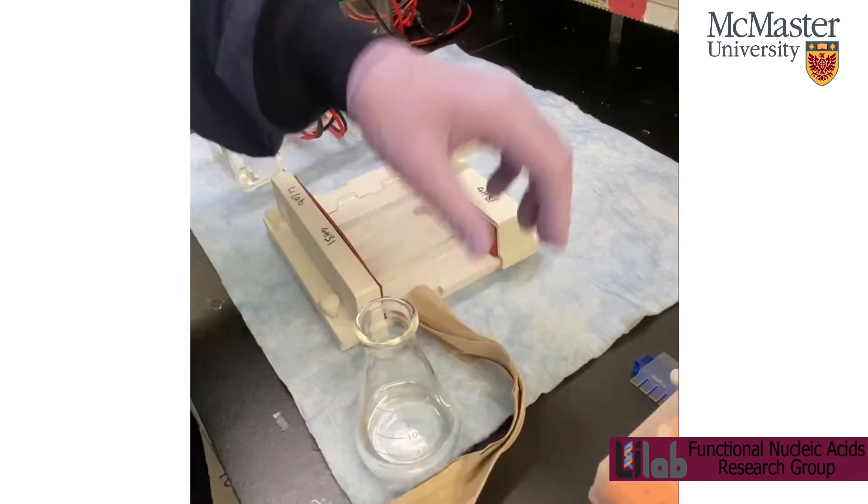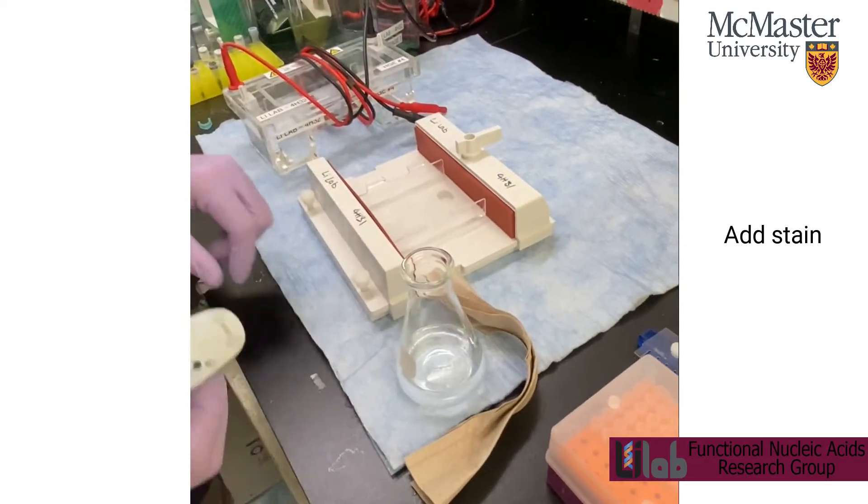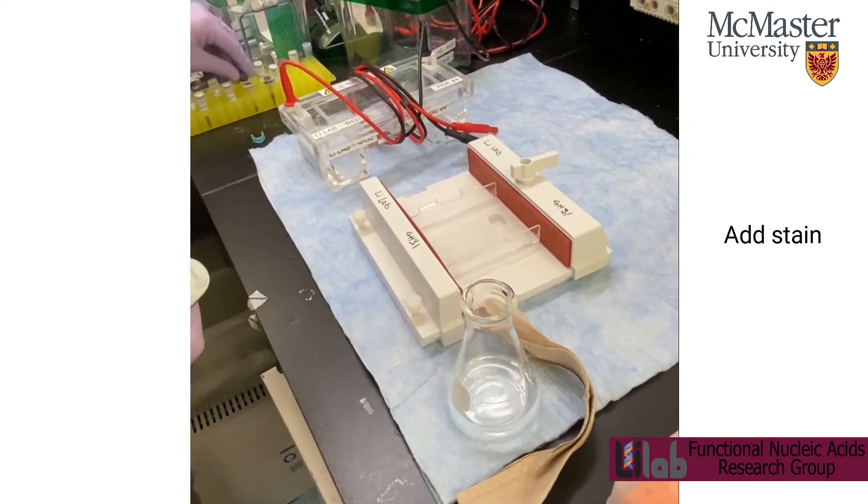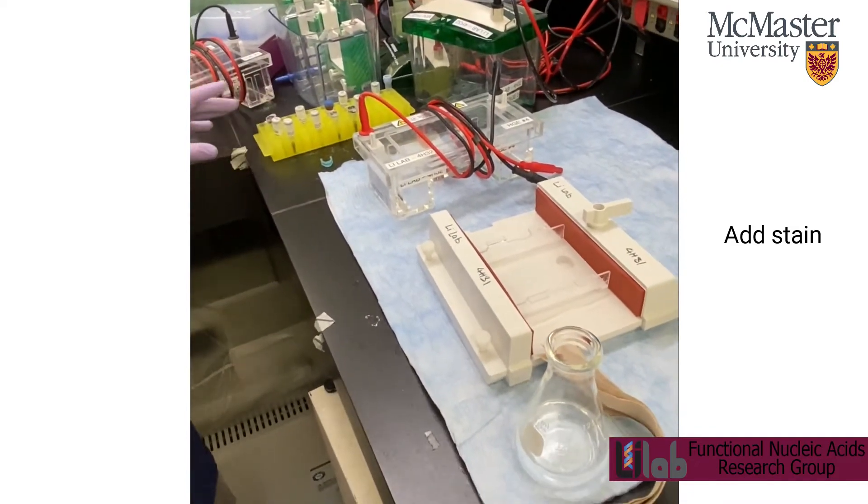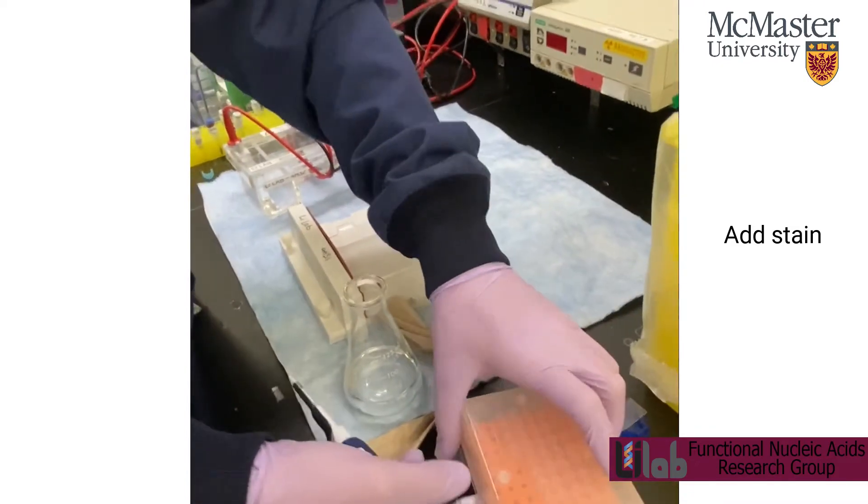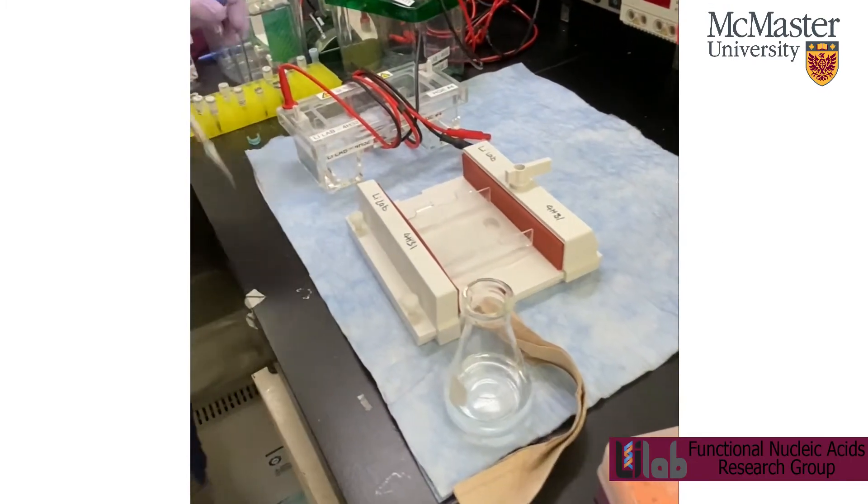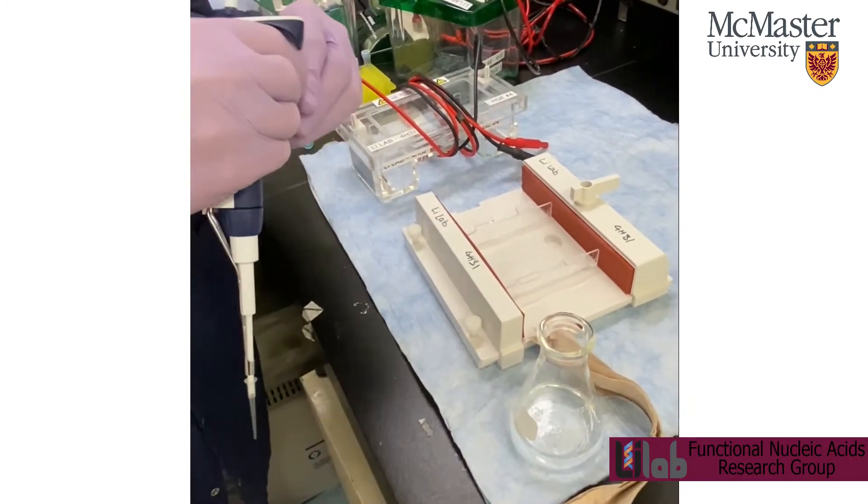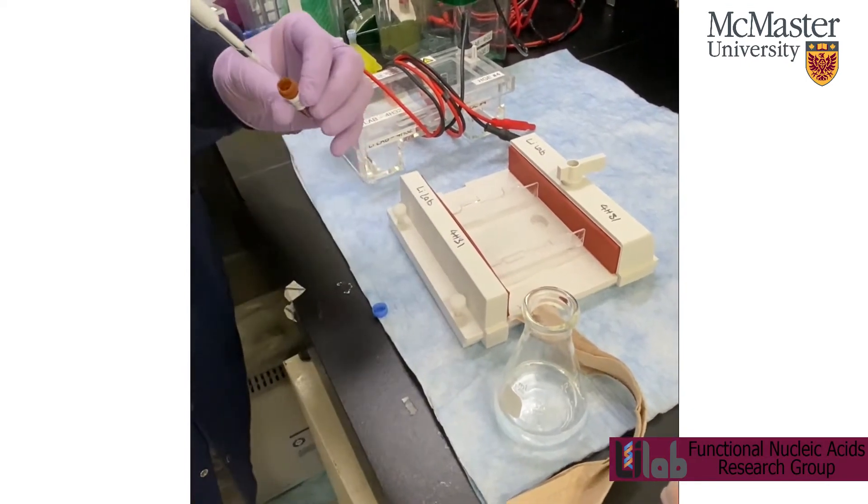And then you can mix your stain in the glass. So you can use CyberSafe. That's just in this tube rack here. So it's 10,000 times concentrated. So to get to one times, I'm just going to add five microliters because my volume is 50 mils.